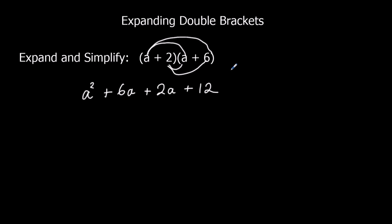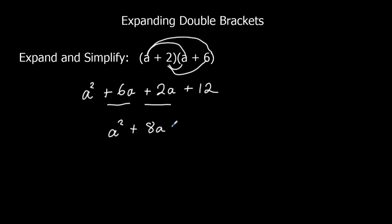That's expanded now, so now we can simplify. The terms we can add up are the two terms in the middle: 6a and 2a. We can't add a squared to a's, and we can't add 12 to a's either, so we can just add up these two. 6a plus 2a is 8a. So we've got a squared plus 8a plus 12 — that's the final answer.